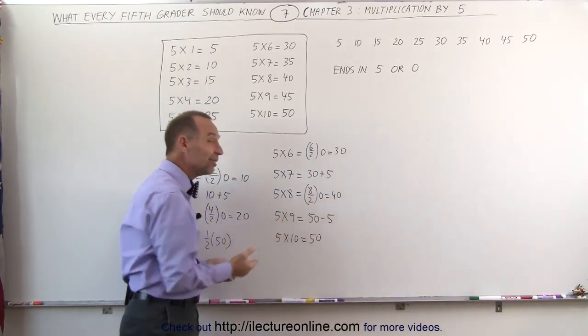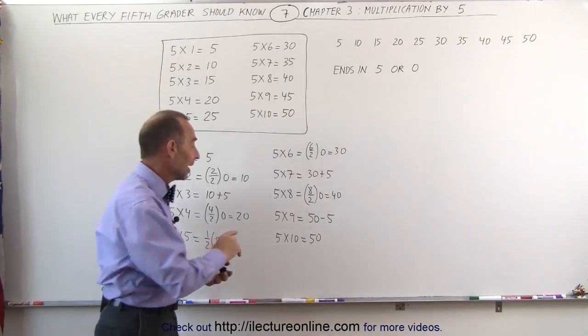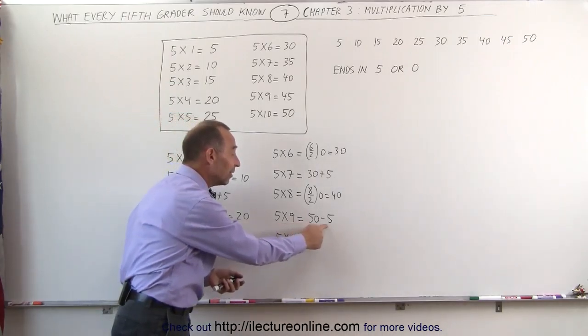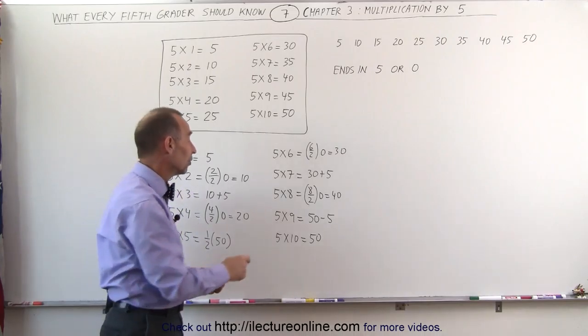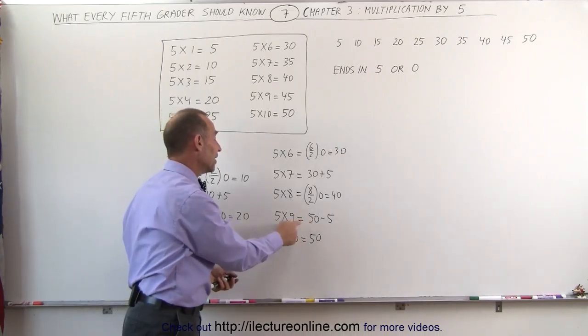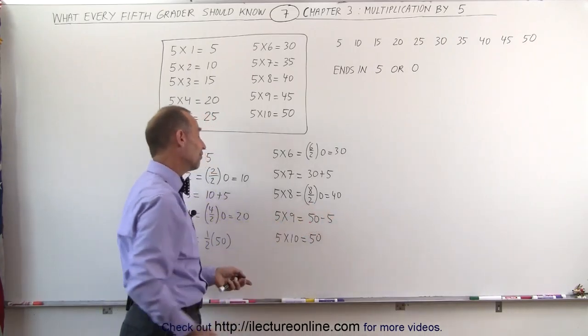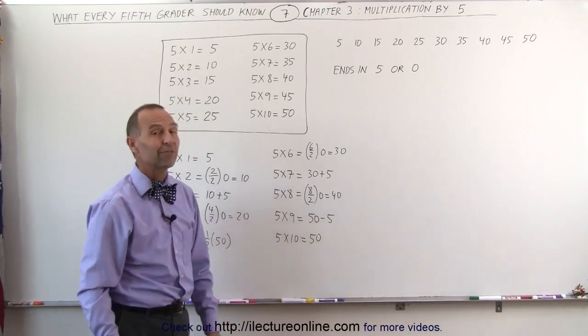And 5 times 9, I like multiplication by 9 because I take multiplication times 10 and subtract 1 of them. And so in this case, 5 times 10 is 50, subtract the 5, I get 45, and 5 times 10 is simply 50.